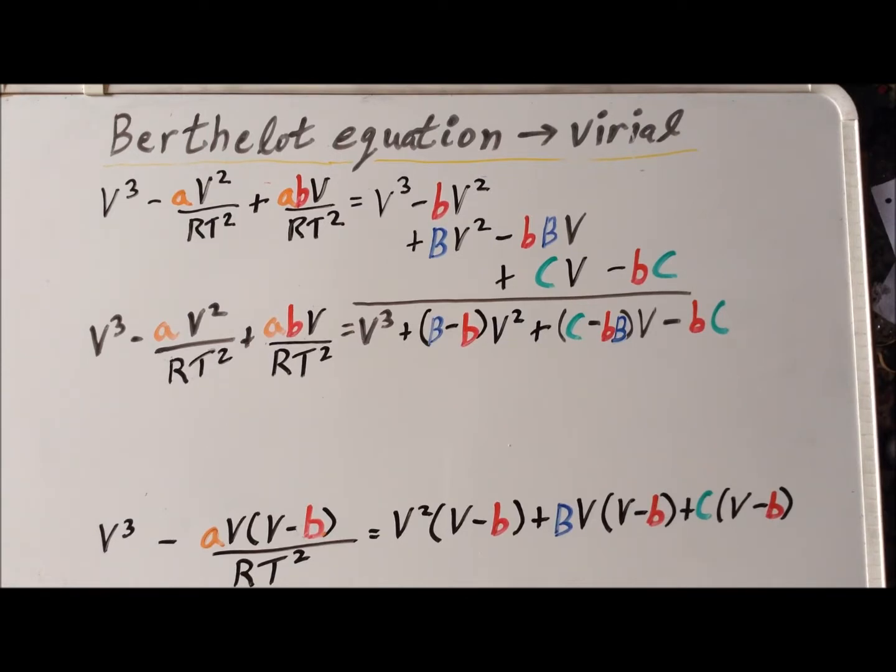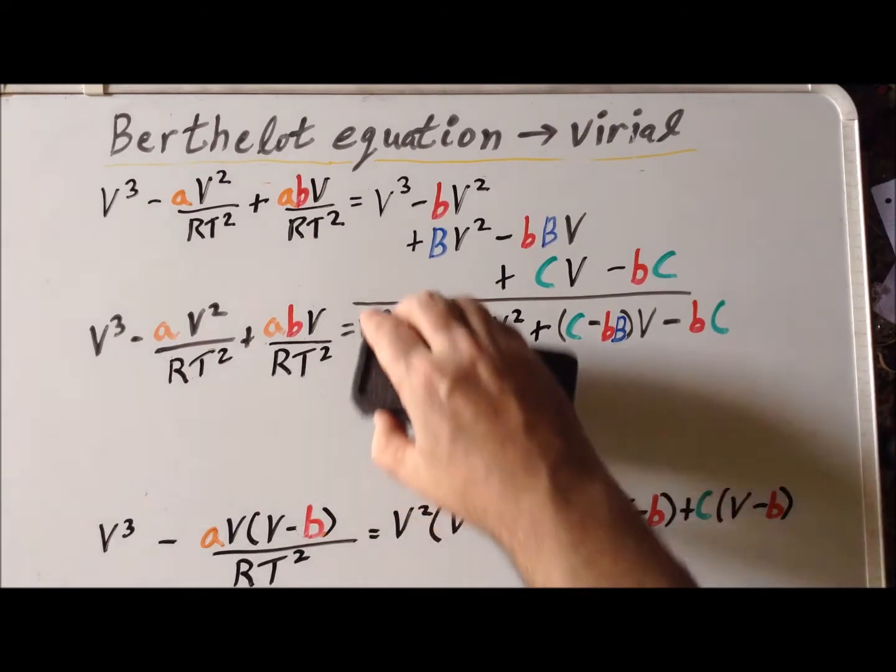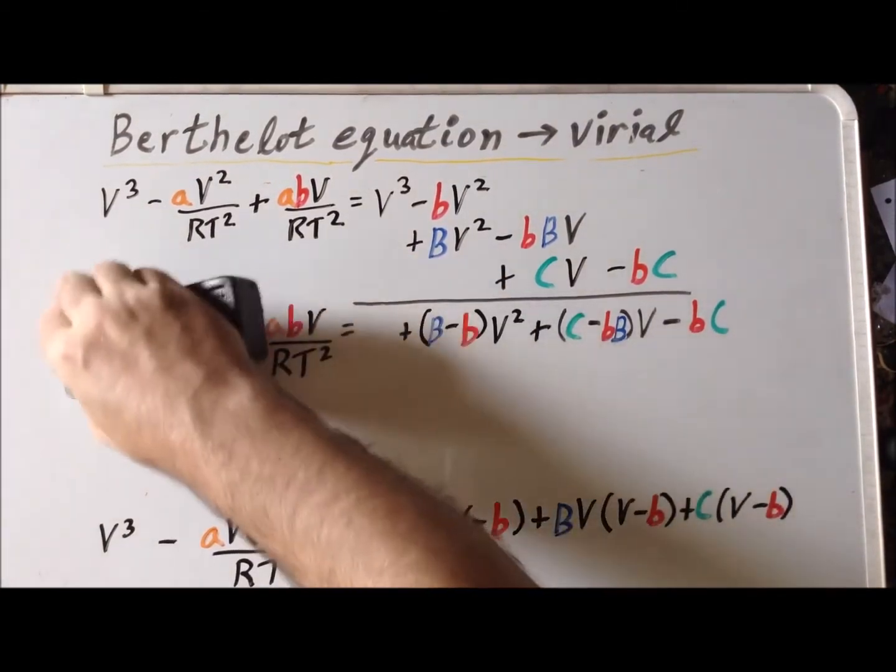Now we're going to exploit a property of polynomials that two polynomials are going to be equal at all points if and only if their coefficients of corresponding powers of the variable V are the same. So one of the things that's helpful right away is we notice that we have V cubed and V cubed on each side. So we can delete them immediately. So we cancel those.